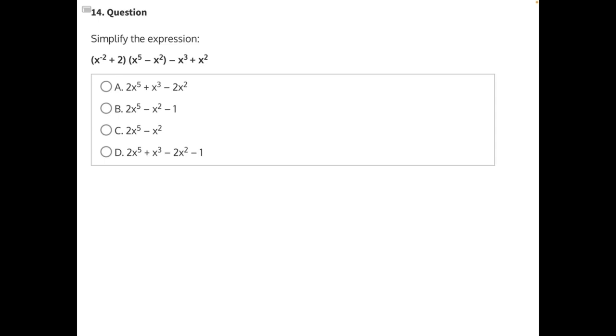Simplify the expression. Let's start by multiplying these two binomials together. And any time we're multiplying binomials, we need to follow the FOIL method.